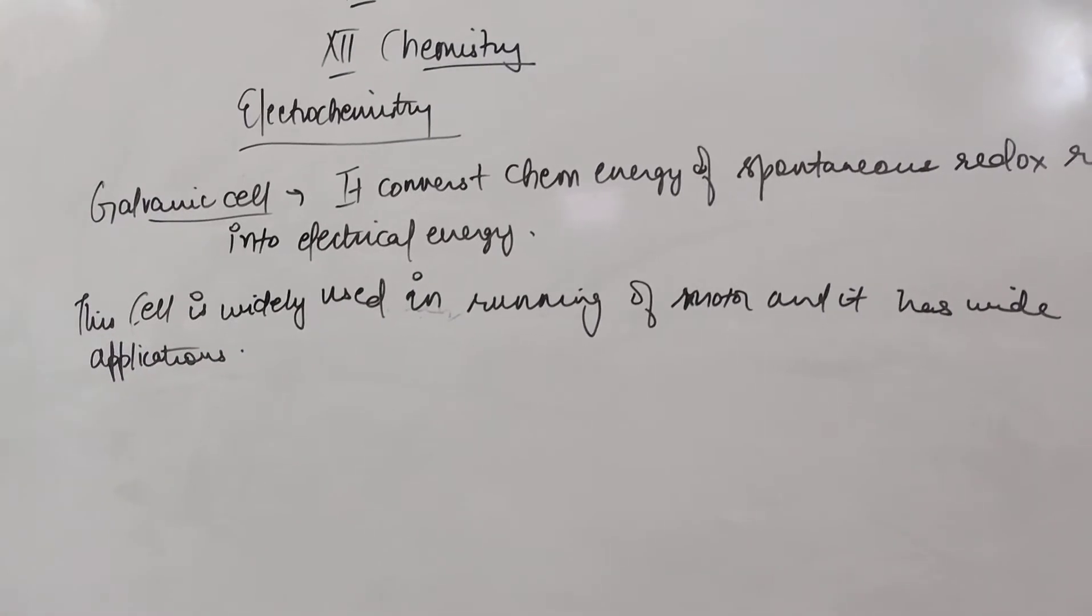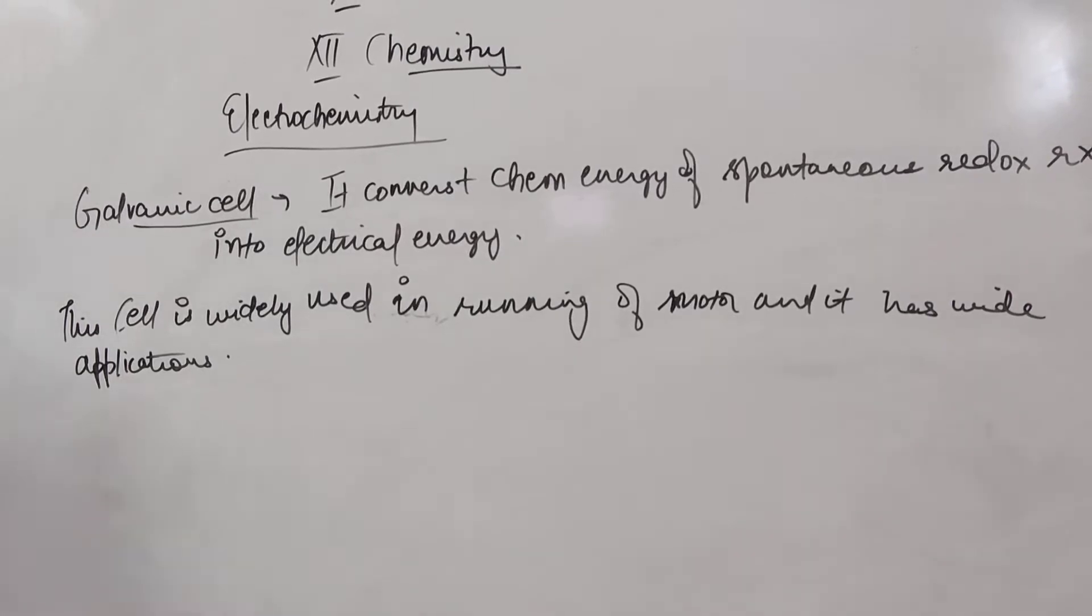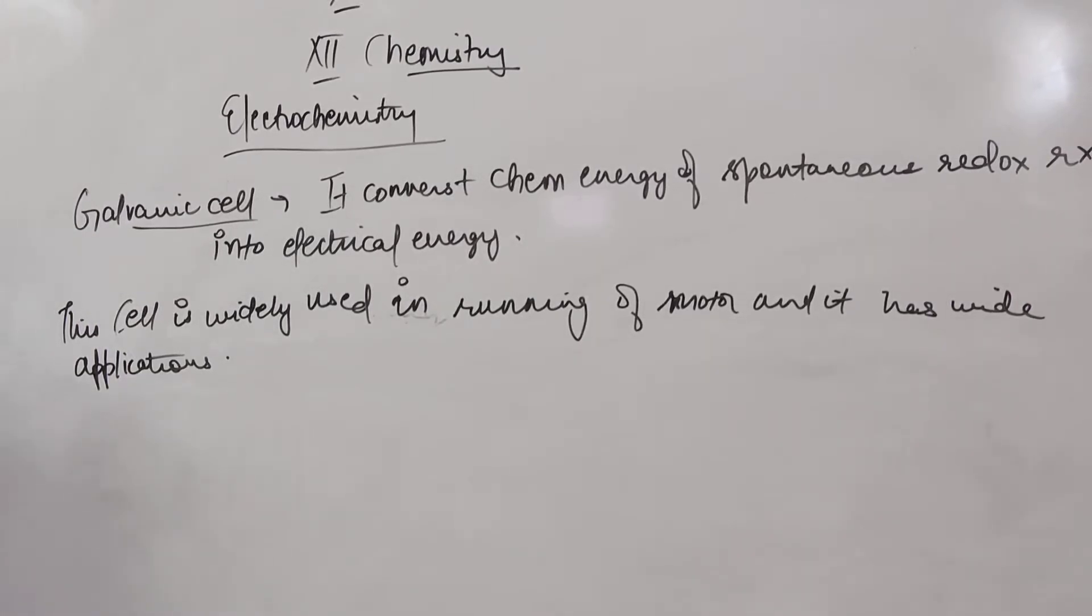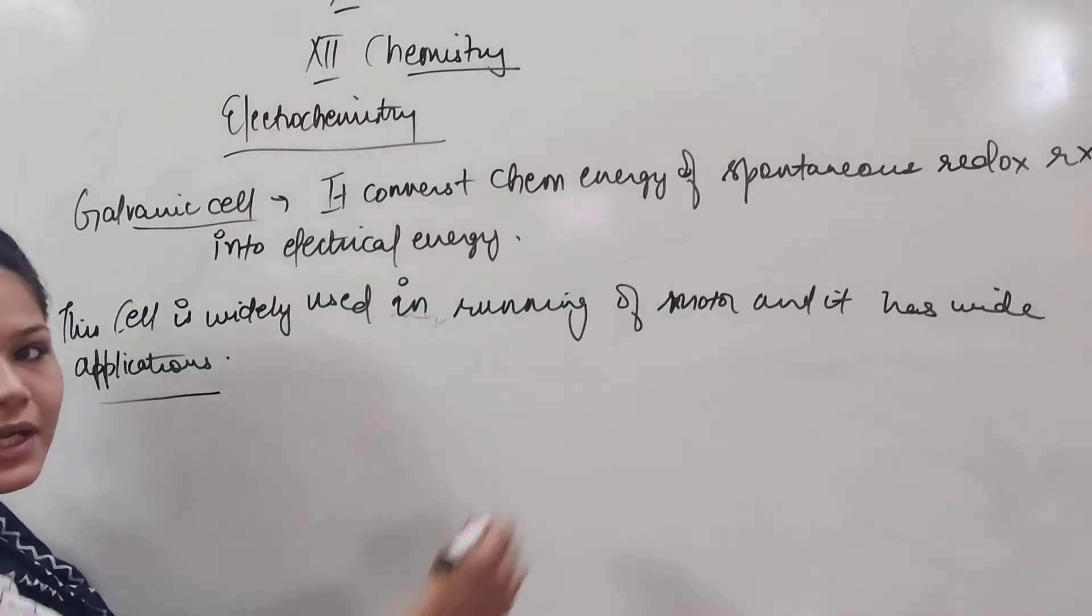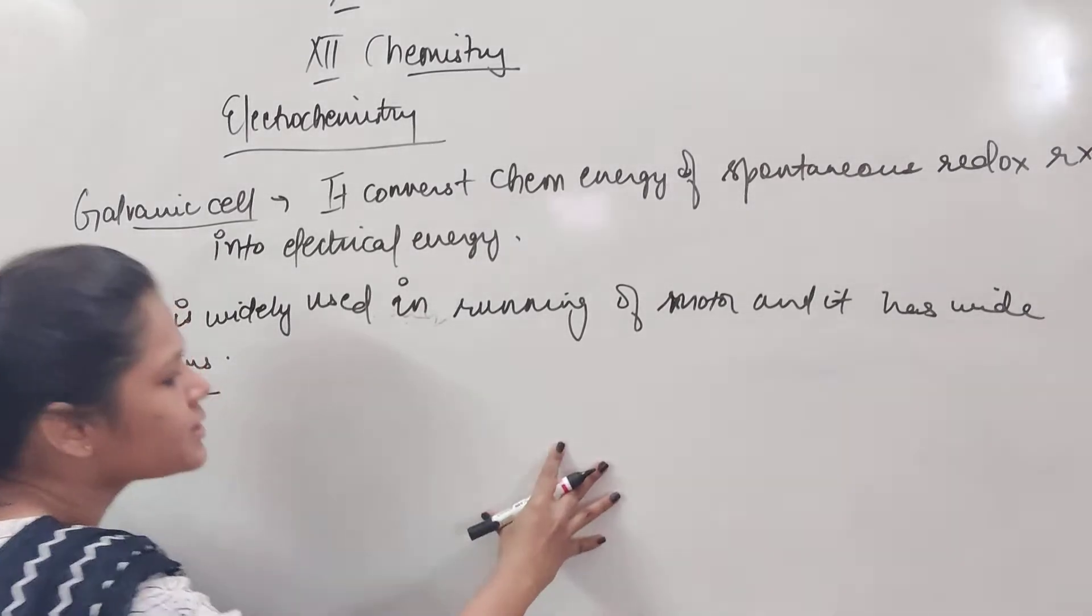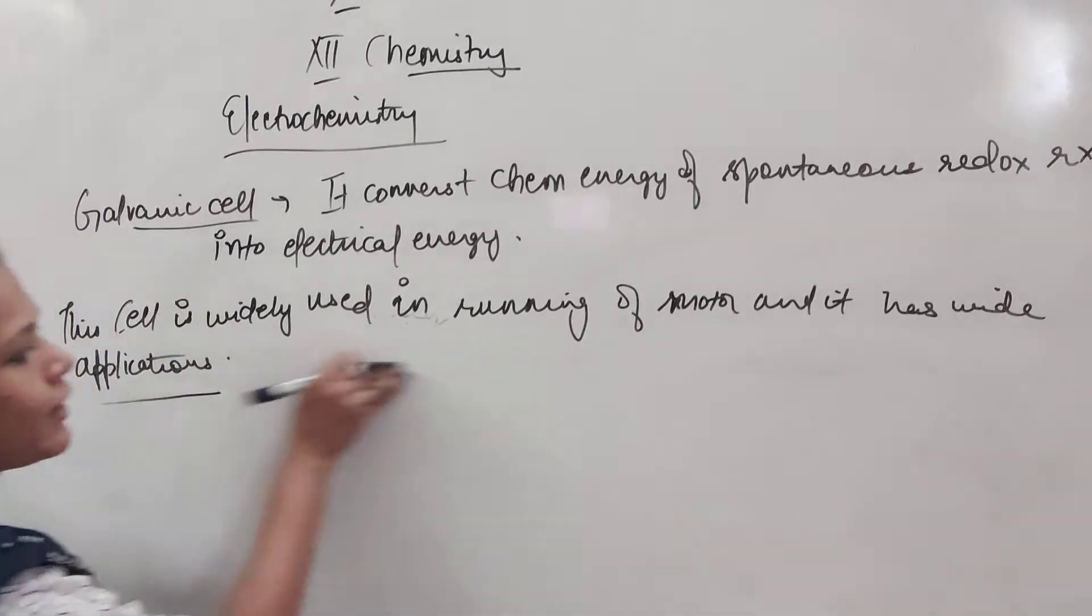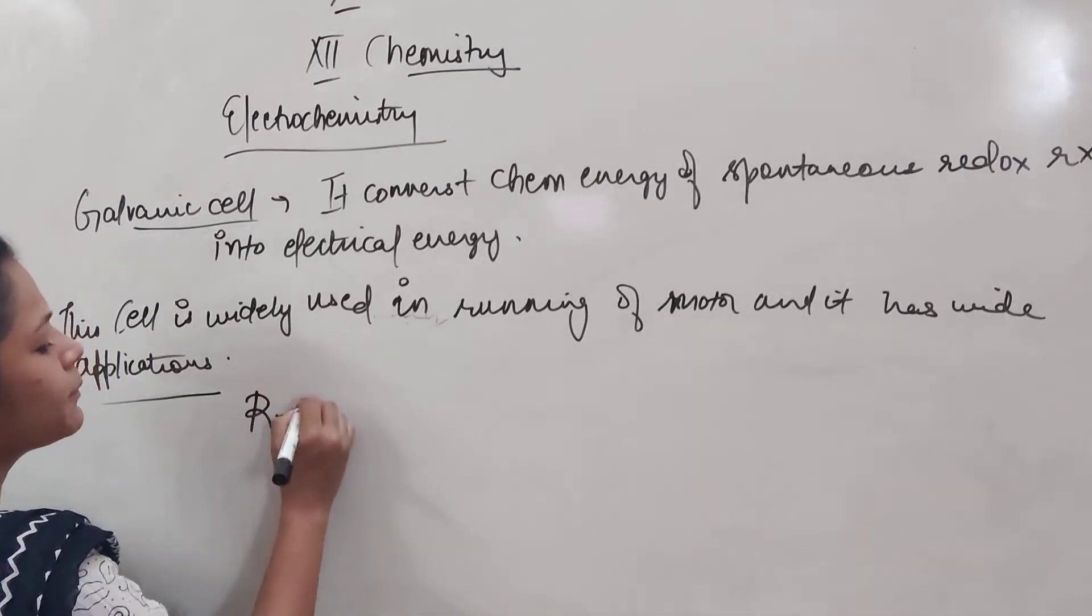Now, if we talk, let me adjust the board. Now, how this particular cell will be represented? We know the reaction that is going on in the cells: zinc sulfate, copper sulfate, electron will flow, current will flow in the opposite direction. You already know that. So how the particular redox reaction can be represented?